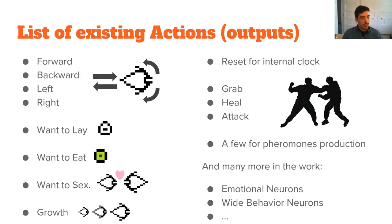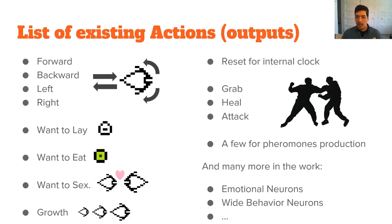As far as actions go and their output nodes, we have nodes for moving around. There are different desires like laying an egg, eating, sexual reproduction, growth, but also a reset for the internal clock system, different outputs for interacting with others — for example, grabbing things which can be other Bibbits, food, eggs, and things like that — and a few to produce pheromones. I'm also starting to work on emotional neurons and wider behavior neurons which would have a more general and complex effect on their body processes and behaviors.